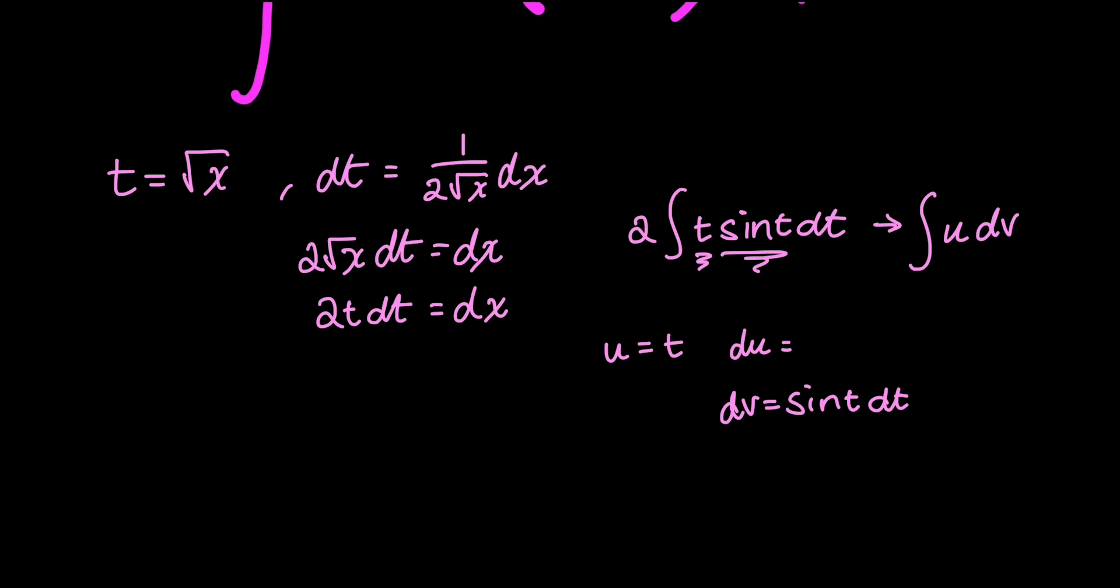u is t, therefore du is just dt. And dv equals sine t dt, so you integrate sine t, and that gives v, which is negative cosine t.